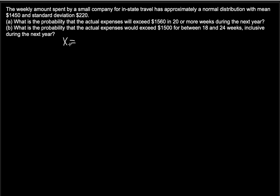The first random variable is the weekly dollar amount spent by the company. We need to find the probability that this random variable exceeds $1560.